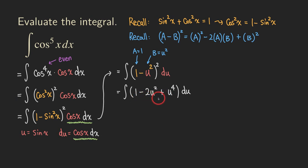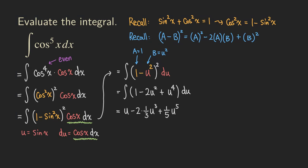Now we can integrate term by term because this is a polynomial. Integrating 1 gives u. Integrating negative 2u squared gives negative 2 times u cubed over 3, since we add 1 to the power and multiply by the reciprocal. Then for u to the fourth, we get u to the fifth over 5. And then we finish with the constant of integration, plus C.